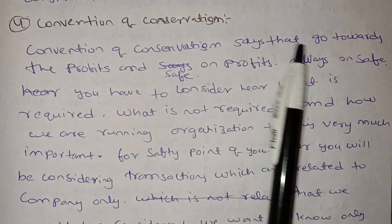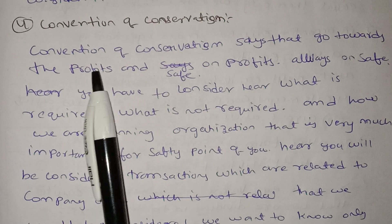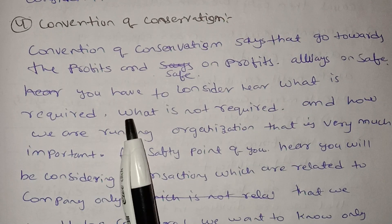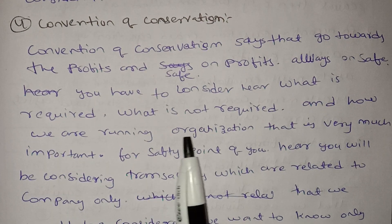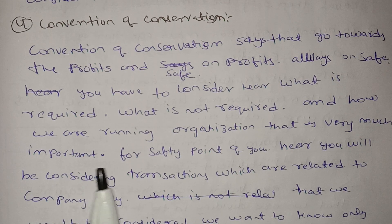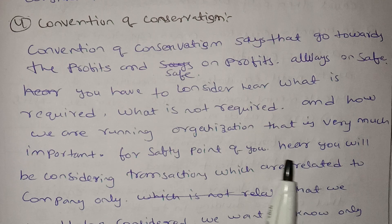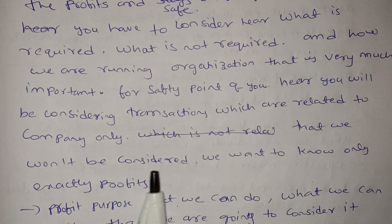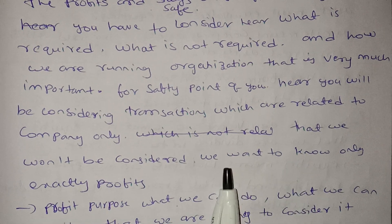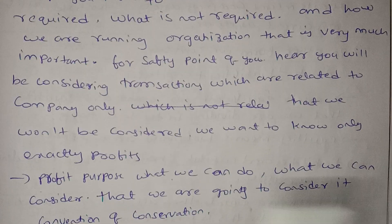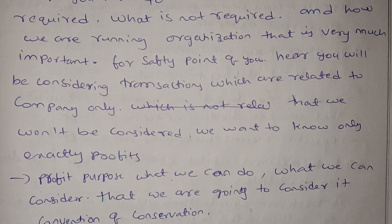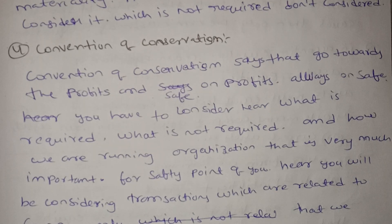Convention of Conservation says that go towards the profits and stay safe on profits — always on the safe side. You have to consider here what is required and what is not required, and how we are running the organization. That is very much important from a safety point of view. Here we will consider only the transactions related to the company. We want to know exactly the profits — what we can do and what we can consider.